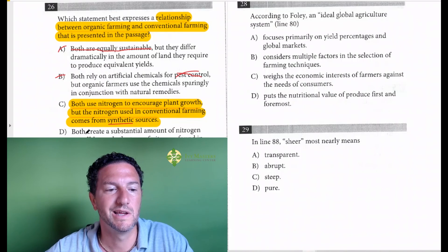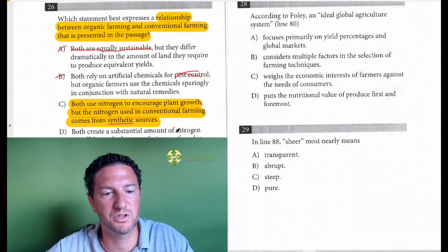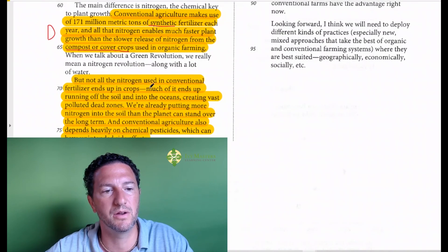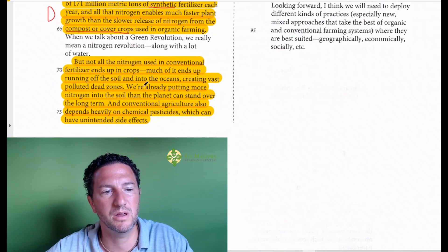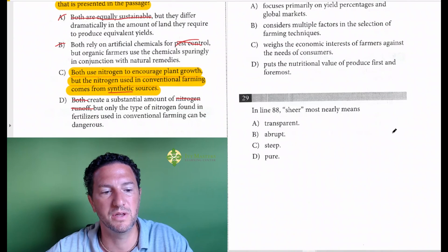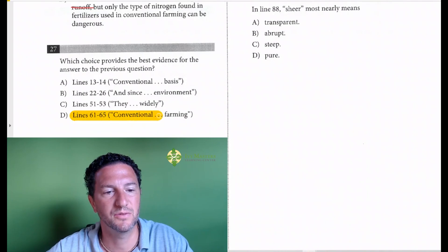But we want to see why answer choice D is wrong. Both create a substantial amount of nitrogen runoff, but the only type of nitrogen found in fertilizers used in conventional farming can be dangerous. So this part, both create a substantial amount of nitrogen runoff - we can't say that both create a substantial amount of nitrogen runoff, and that's why I wrote this last part to you. Because it is talking about nitrogen runoff here, but it's only talking about the nitrogen runoff from conventional agriculture. So our correct answer here is, and if you noticed, the lines that I used to support answer choice C here was answer choice D for number 27.